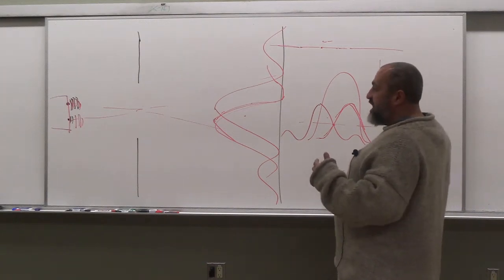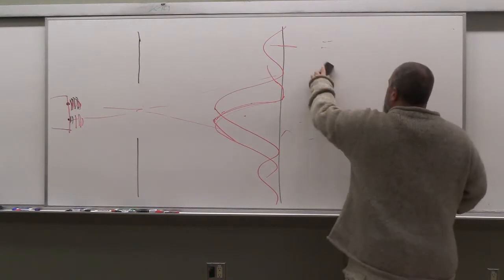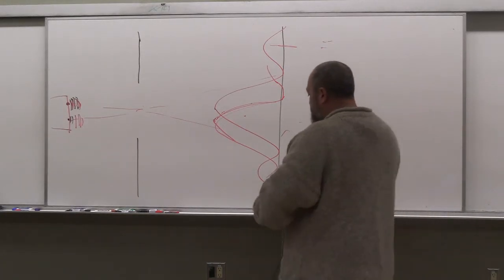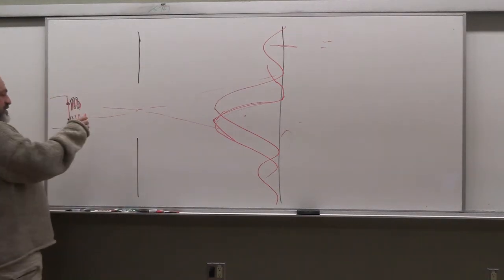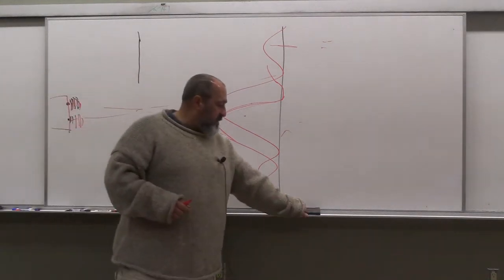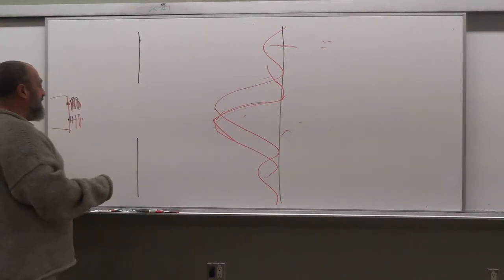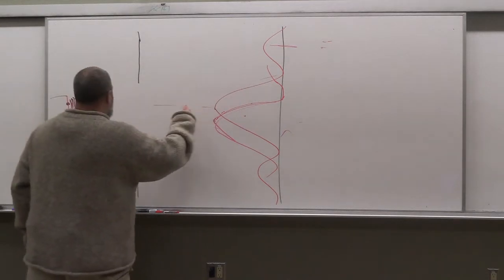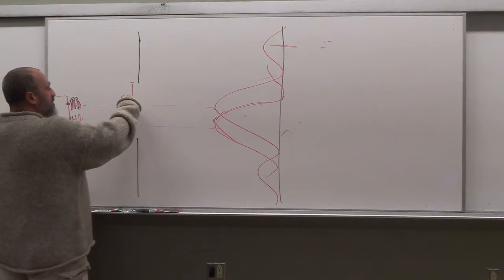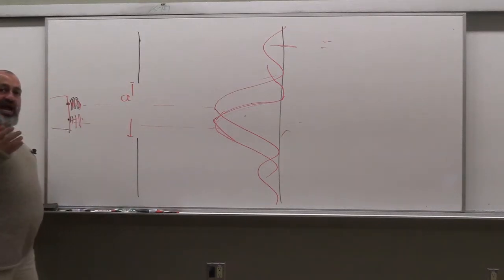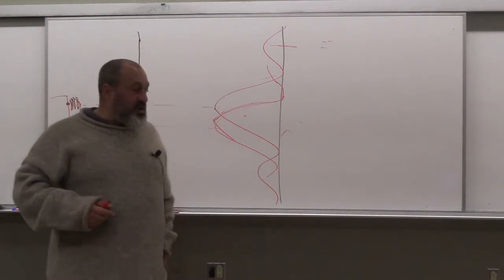So we're going to examine the Rayleigh criterion and how it plays with the double slit apparatus. We said that these two sources are separated by some distance. Basically this angle here — the angular separation of the two objects — is also the angular separation of the two peaks. When are the two peaks going to meet at half point?